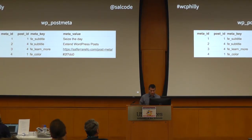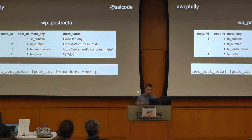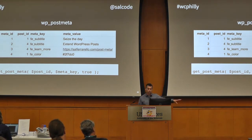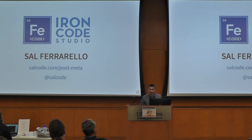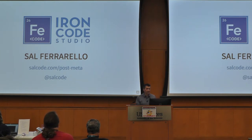To recap: we've got the wp_postmeta table where we store post meta information. We tie it to the post through that post ID. And we use the get_post_meta function to pull that information out by giving it the post ID, the meta key, and always that third value of true. I do work as Iron Code Studio. I have a blog post as a companion to this at salcode.com/post-meta. I am on Twitter as salcode and I will be tweeting out that link. Thank you.